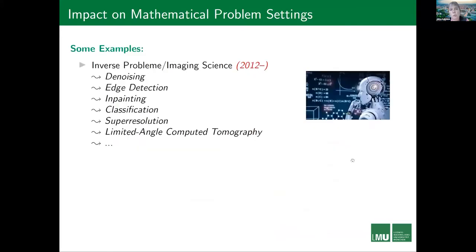If we then get to mathematics, what we observe is that the area of inverse problems and imaging sciences was first heavily impacted by these new approaches, basically since 2012. In various areas like classical tasks — denoising, edge detection, and so on — these methods sometimes quite easily reach the state of the art. But what also turned out is that the best approach is typically to combine these new methods with model-based approaches to construct hybrid approaches, and we will see one example later on.